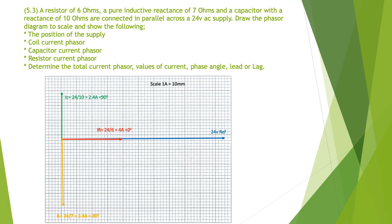And of course we have to add the inductor current. So the IL, the orange phasor is 24 divided by 7 because it's 7 ohms, giving us 3.4 amps. And it was told it was a pure inductor, so it's at minus 90.